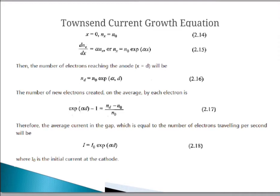Therefore, the average current in the gap, which equals the number of electrons traveling per second, is i equals i0 times exponential of alpha d, where i0 is the initial current at the cathode.